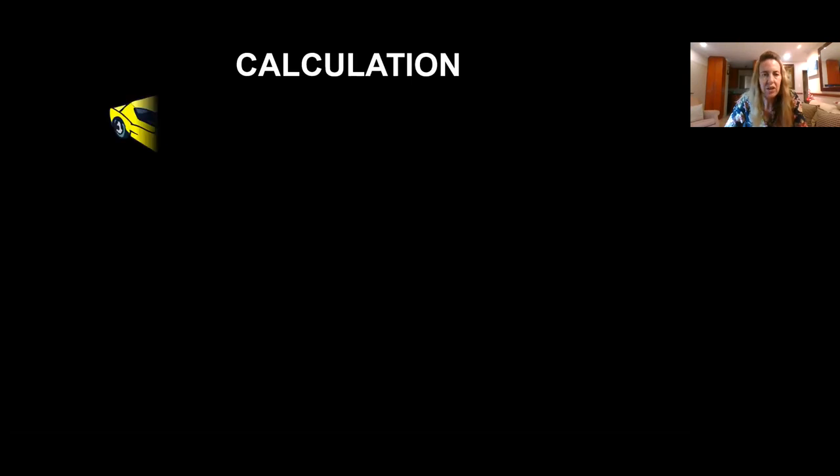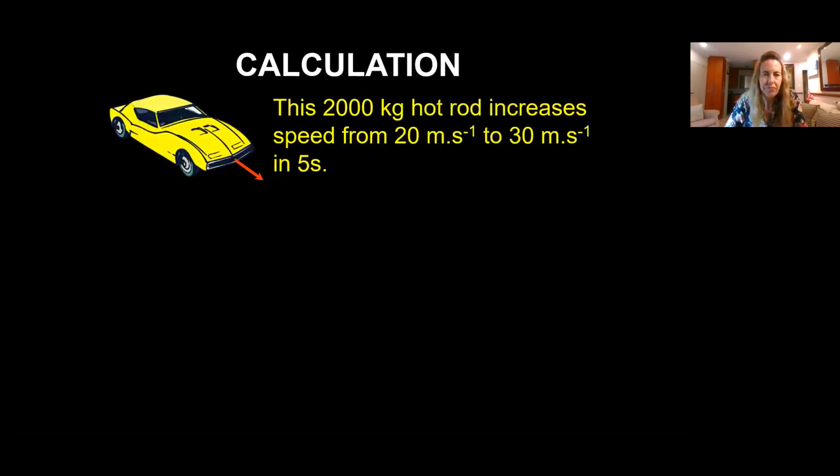So let's do a calculation. This is a 2000 kilogram hot rod car that increases speed from 20 meters per second to 30 meters per second in five seconds. Please underline all the values given to you and please write the physical quantities of each of those values on top of them so that you can make sense of what's given and what's asked and then choose the right appropriate formula for your calculation.